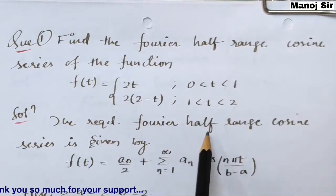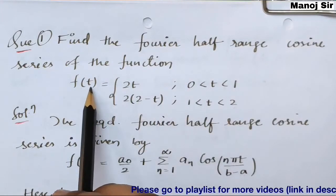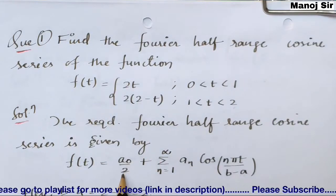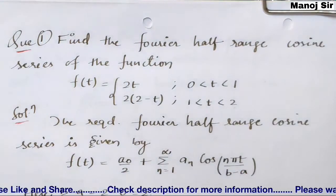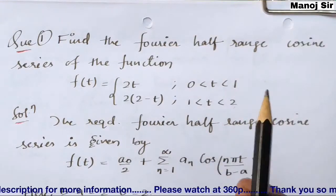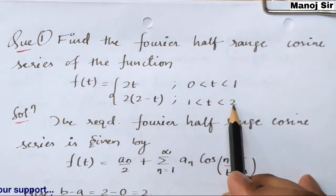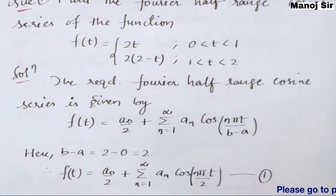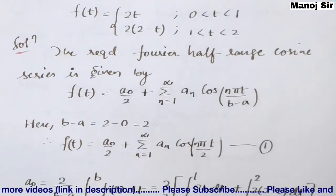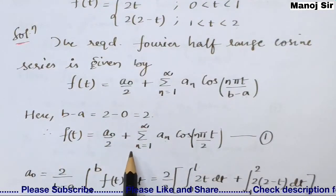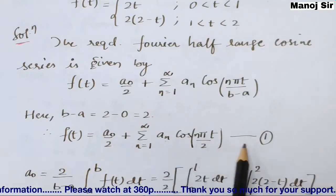The required Fourier half range cosine series is given by f(t) = a₀/2 + summation from n=1 to infinity of aₙ · cos(nπt / (b−a)). Here a is the lowest limit and b is the highest limit, so b = 2 and a = 0, giving b − a = 2. So f(t) = a₀/2 + summation aₙ · cos(nπt/2). Call this equation 1.